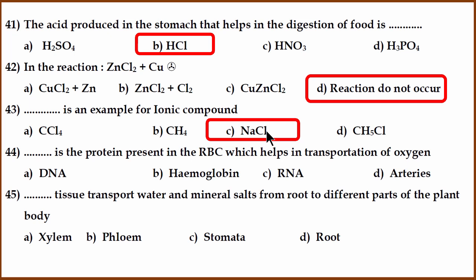Fourth question. What is a protein in RBC that helps in transportation of oxygen? The correct answer is hemoglobin. Hemoglobin is a protein which helps in transportation of oxygen.